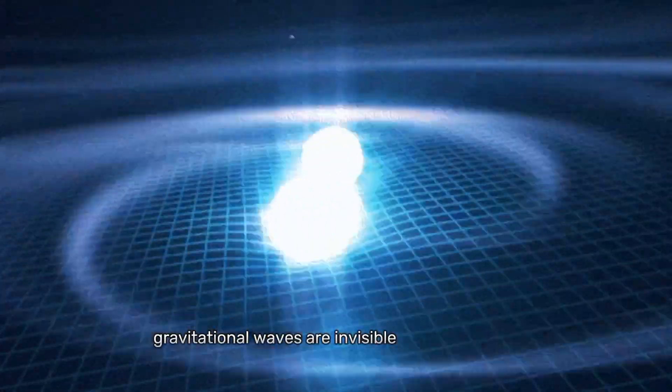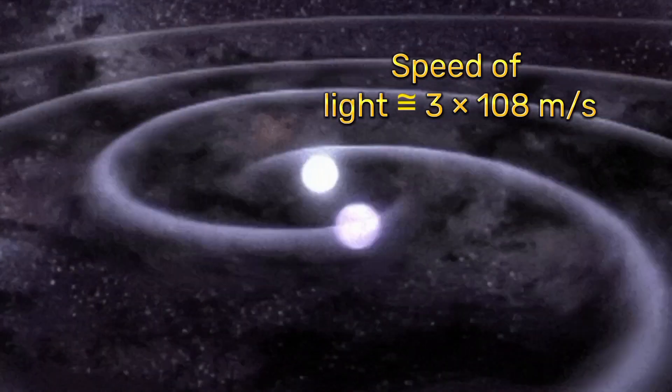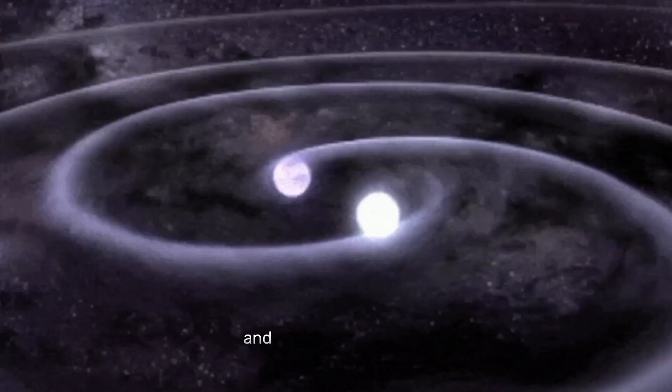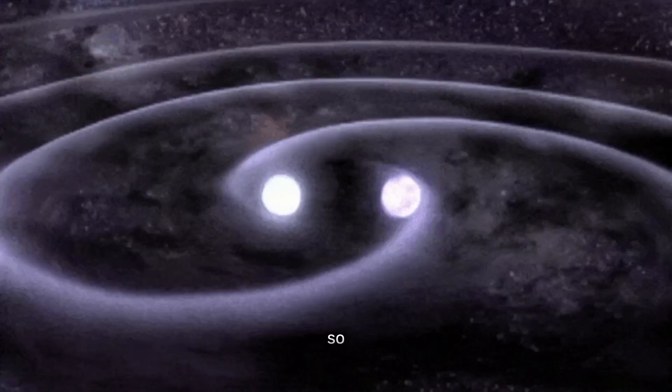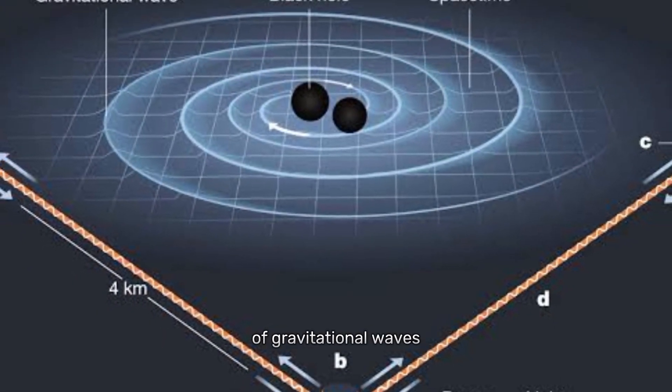Gravitational waves are invisible ripples in spacetime that travel at the speed of light. And in this video, we'll explore what gravitational waves are, how they're created, and how scientists are able to detect them. So sit back, relax, and get ready to learn about the incredible world of gravitational waves.